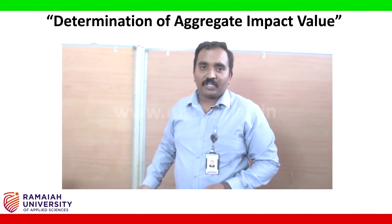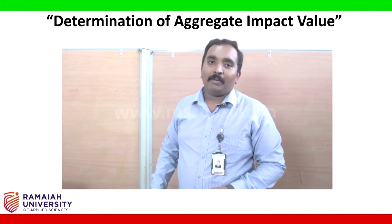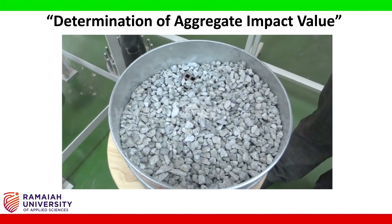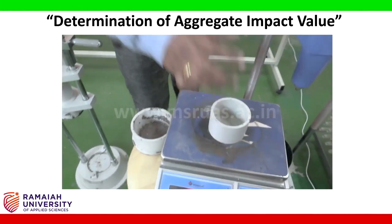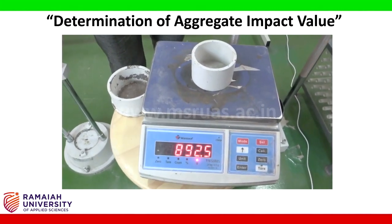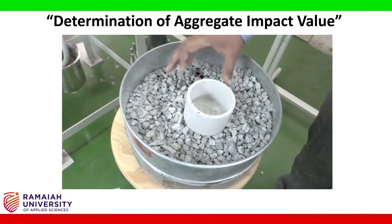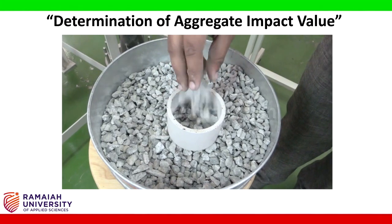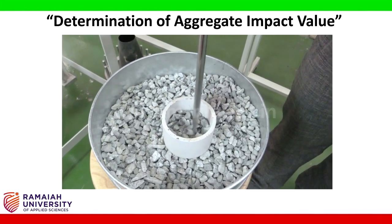Second step is sample preparation. We take aggregates passing through 12.5 mm and retained on 10 mm IS sieve. I have already taken some sample which passes 12.5 mm and is retained on 10 mm IS sieve. Next, we take the empty weight of the measuring cylinder — let it be W1 grams. I am going to fill this measuring cylinder with 3 equal layers of aggregates, and each layer will be given 25 tampings.